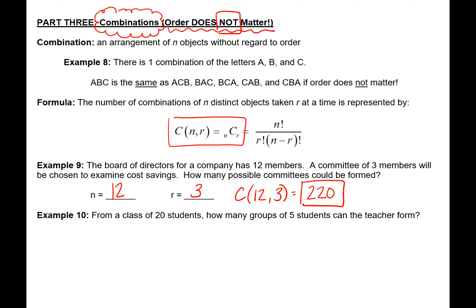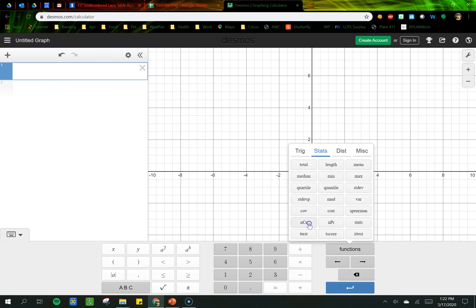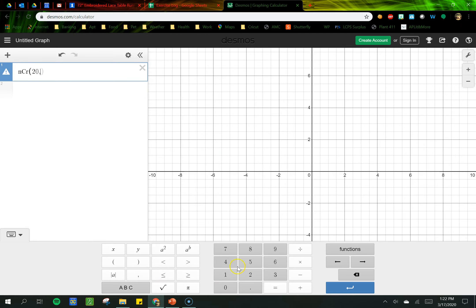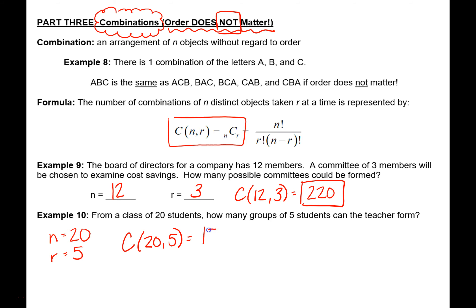The next example: from a class of 20 students, how many groups of five students can the teacher form? We have 20 students total and we're looking to choose groups of five. The groups don't have special roles — it doesn't matter if you get picked first versus second, you're still part of that group. So this is a combination, not a permutation: 20 objects taken 5 at a time. In Desmos we choose combination and enter 20 comma 5. Our final answer is 15,504 possible combinations.